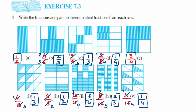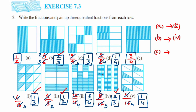Now we pair equivalent fractions. For figure A, the fraction is 1 upon 2, which matches the second figure of the second row. For B, the fraction is 2 upon 3, which matches the fourth figure of the second row. For C, the fraction is 1 upon 3, which matches the first figure of the second row.